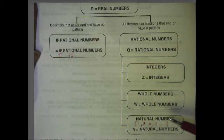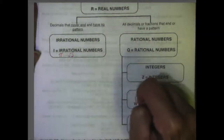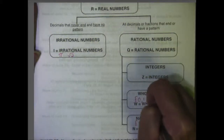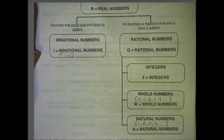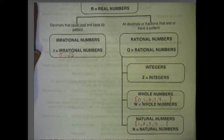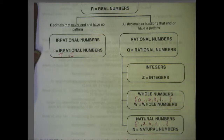Whole numbers are the same as natural, but they include one more number — they start with 0: 0, 1, 2, 3, 4, and they go on and on. Again, no fractions, no decimals, unless they simplify to one of these numbers. So for example, if you had 4 over 2, the fraction 4/2 would simplify to 2, and it would be a whole number even though it's also a fraction.